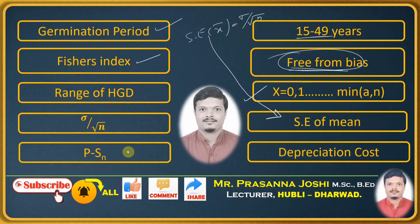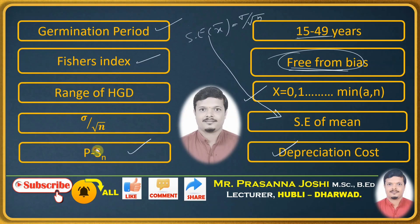Next match: P minus Sn, which comes from the replacement theory chapter. P is the purchase cost and Sn is the resale value. P minus Sn gives the depreciation cost. So this is matched with depreciation cost.